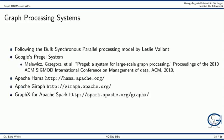Several systems are also available for pure graph processing rather than graph storage. They usually apply bulk synchronous parallel processing, a model proposed by Leslie Valiant. Following Google's Pregel system, several open source systems have appeared. Some of them are Apache Hama, Apache Giraph, and GraphX for Apache Spark.